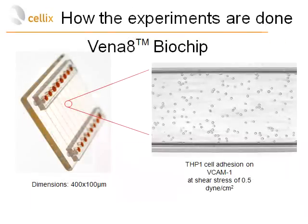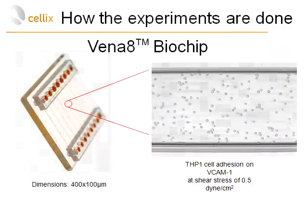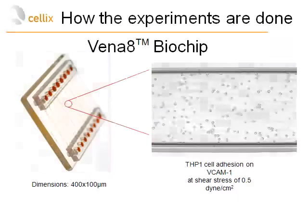In this set of results, we used Vena 8 biochips, which have 8 microchannels with dimensions of 400 microns wide by 100 microns deep. These can be pre-coated with a range of different ligands: VCAM-1, E-selectin, and fractalkine. On the right-hand side, you can see an image of THP-1 cell line adhesion to a VCAM-1 coated Vena 8 biochip.